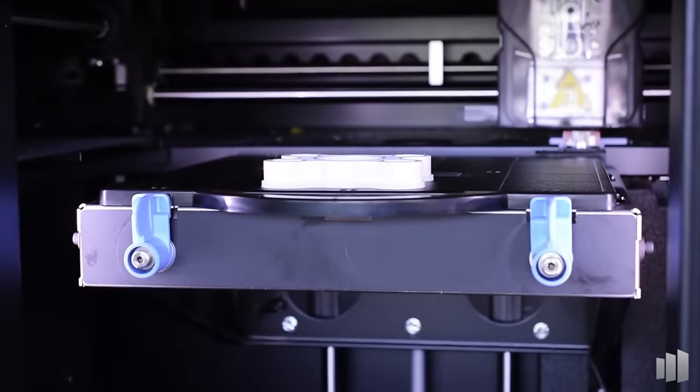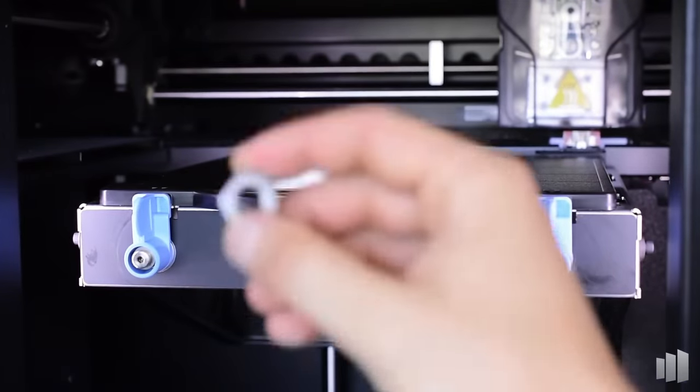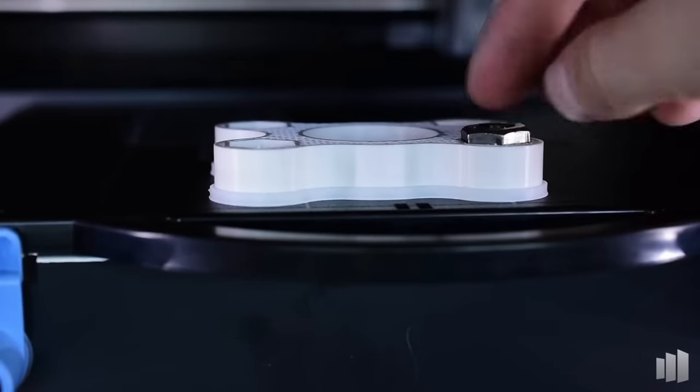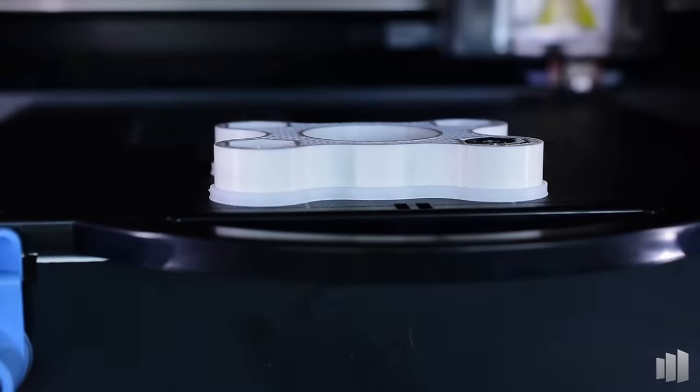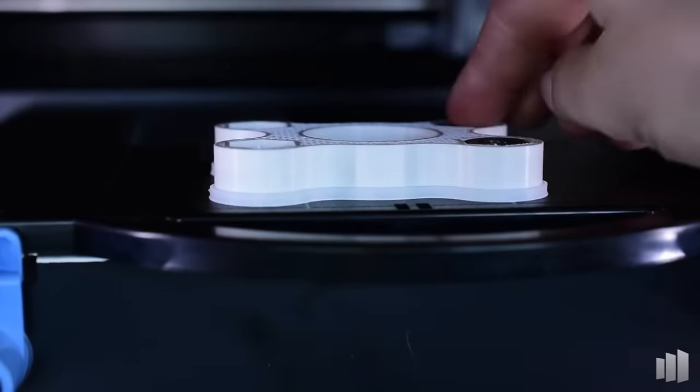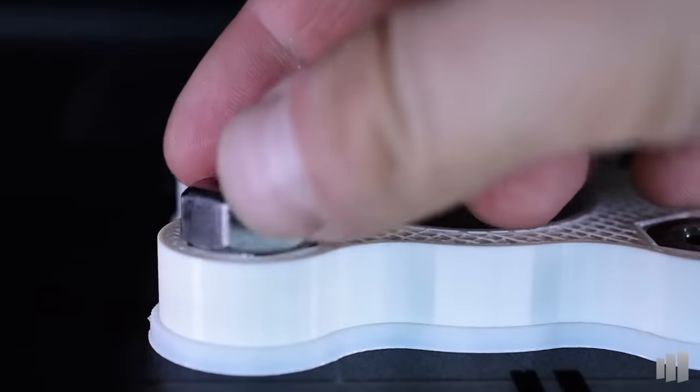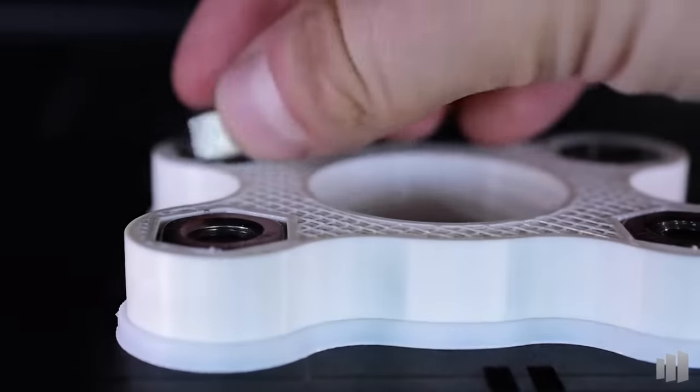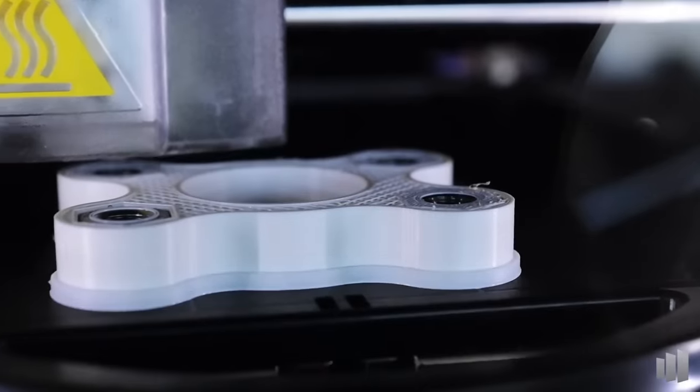Hex nuts. Try using drop-in captured hex nuts next time instead of threaded heat set inserts. Hex nuts are more widely available and much cheaper than brass inserts. And using this technique, they will be more resistant to rotation and more resistant to pulling out in both directions. Dropping these into the middle of a build can also be faster than adding heat set inserts later.